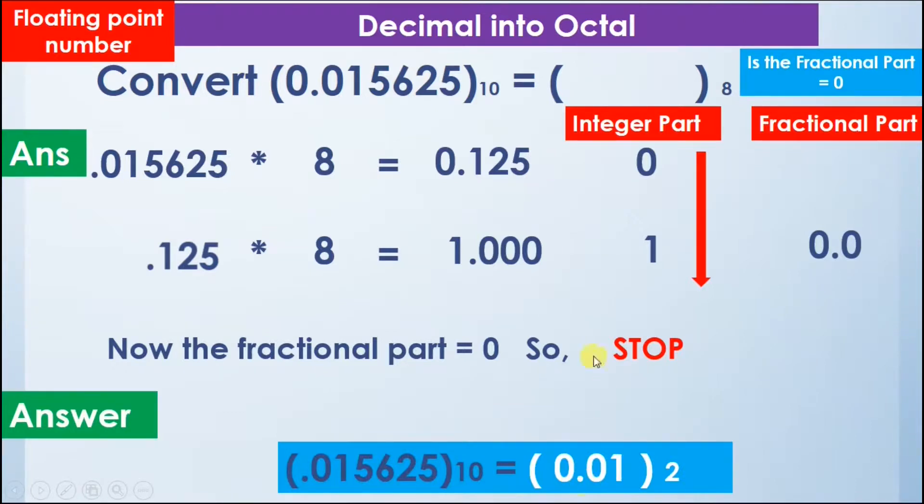That is first comes point and then 0 and 1. See we are going from top to bottom of the integer part. So we will calculate it in this way. The decimal point will maintain its place, that is towards the left side of the number. So now we can say that the number 0.015625 in decimal is equal to 0.01 in octal.